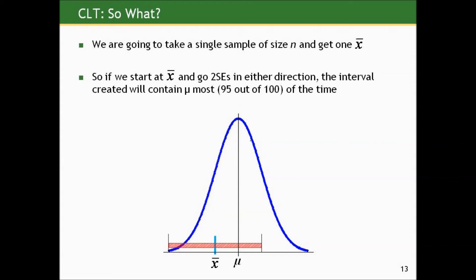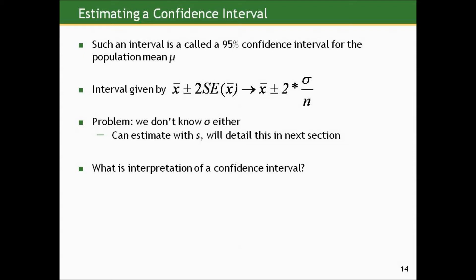So we take a single random sample, and most samples we could get will have a sample mean that falls within two standard errors of mu. Conversely, if we start from our sample mean estimate and go two standard errors in either direction, the interval we create will contain mu about 95% of the time. Such an interval — formed by taking our best guess for a population mean from a single sample and going two standard errors in either direction — is called a 95% confidence interval for the population mean mu, given by x-bar plus or minus two times sigma over the square root of n.